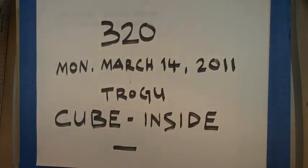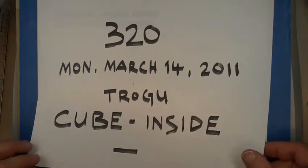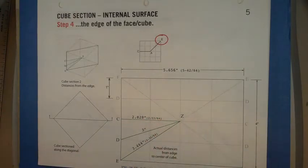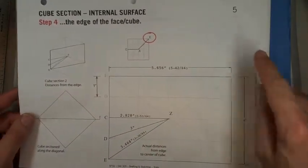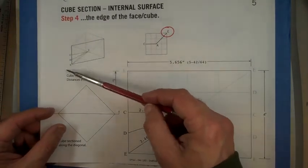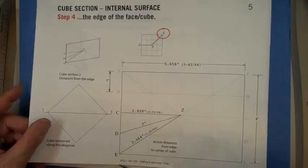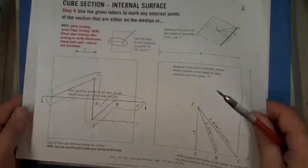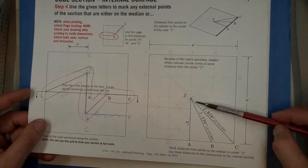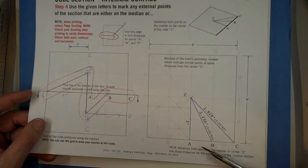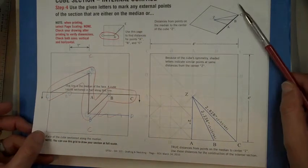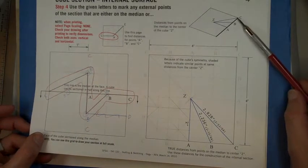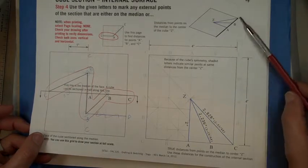Here's a little demo on how to do the inside of the cube. There is a little bit of description in the handout that contains these pages, so there's a little bit of a repeat of that. To make the inside you will definitely need page 5, which shows how to find points that are along the edge of the cube, and page 4, which shows two dimensions from points A, B, and C, which lie on the median line on the face of the cube.